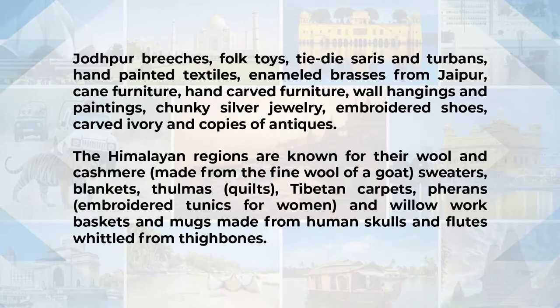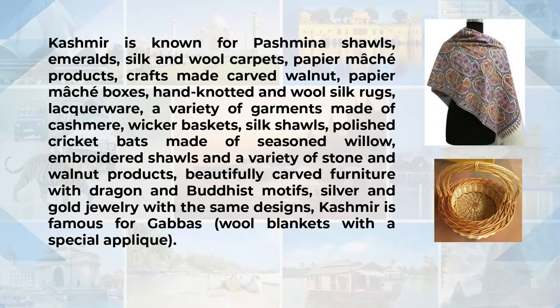The Himalayan region is known for wool and cashmere — made from the finest wool of a goat — including sweaters, blankets, quilts, Tibetan carpets, and embroidered tunics for women. Willow work baskets are also popular. Kashmir is known for its pashmina shawls, emeralds, silk and wool carpets, papier-mâché products, crafts made from walnut, hand-knotted wool and silk rugs, lacquer ware, cashmere garments, embroidered shawls, and furniture with dragon and Buddhist motifs, along with silver and gold jewellery.